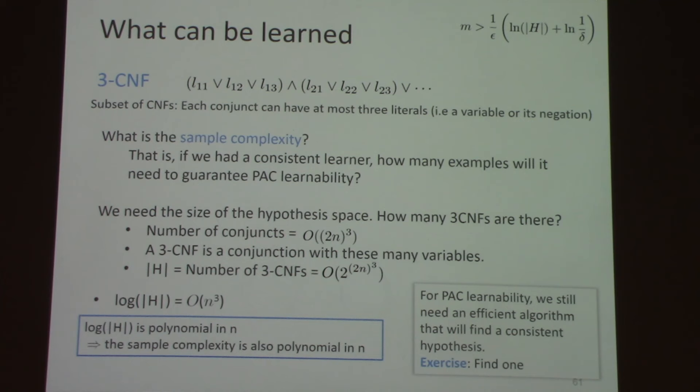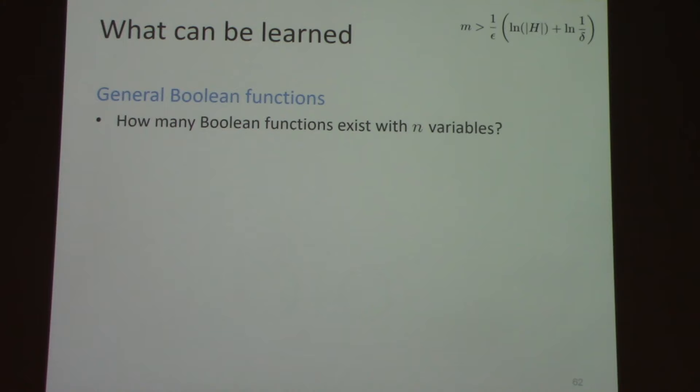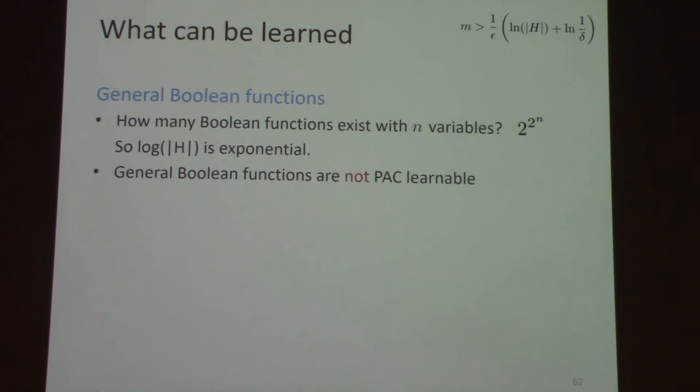Last thing I'll do today: general Boolean functions. How many Boolean functions exist if you have n variables? The answer is 2 to the power of 2 to the power n. So log of the size of the hypothesis space is still 2 to the power n — it's exponential. Therefore, general Boolean functions are not PAC learnable, because you would need an exponential number of examples to get the epsilon-delta guarantee. We're not even going to ask whether they are efficiently PAC learnable, since they are not even PAC learnable.